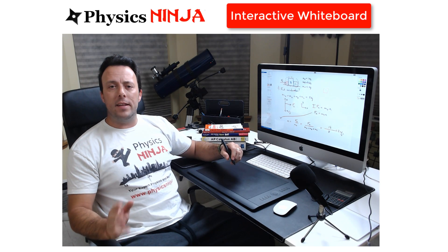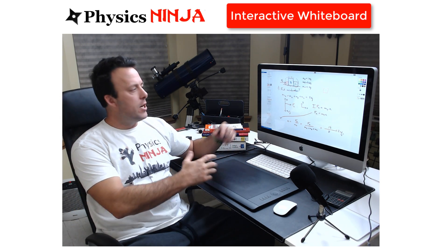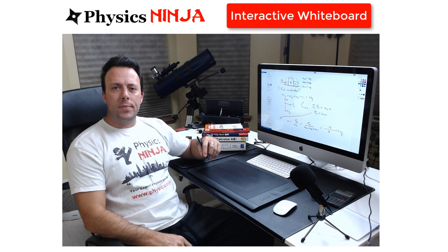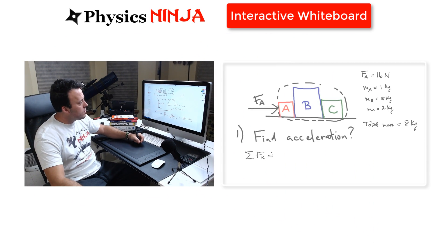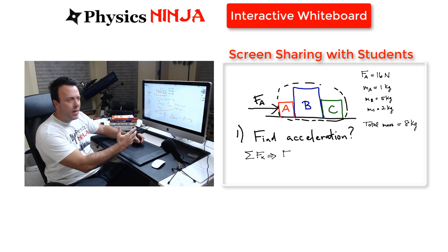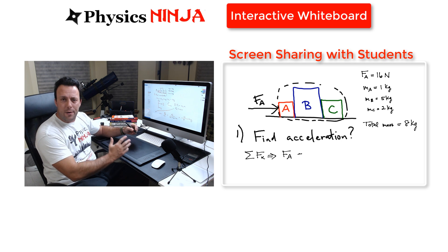The first method for online tutoring uses an interactive whiteboard and computer software to share my screen. Students can see exactly what's on my screen, and I'm able to write equations, sketch a diagram, and I'm even able to share other applications to make the tutorials more interactive.